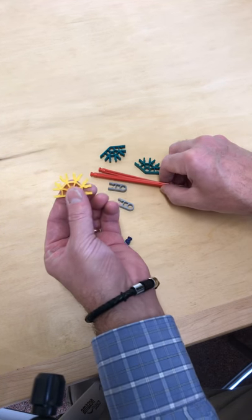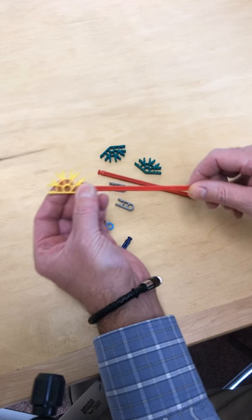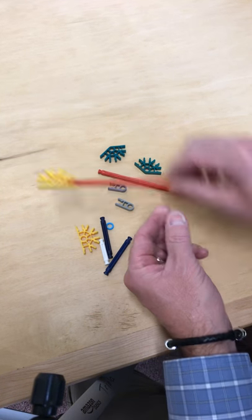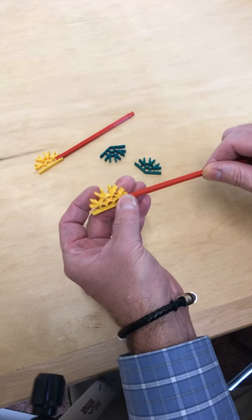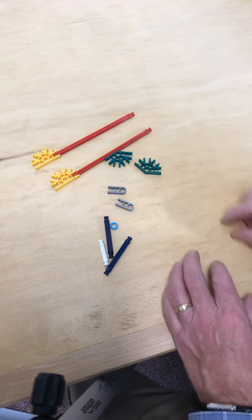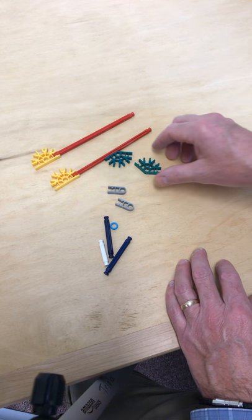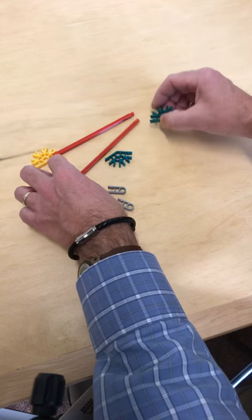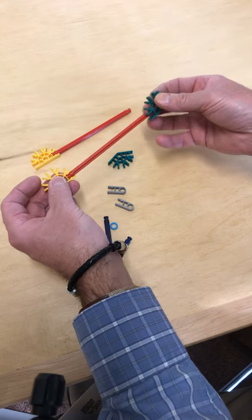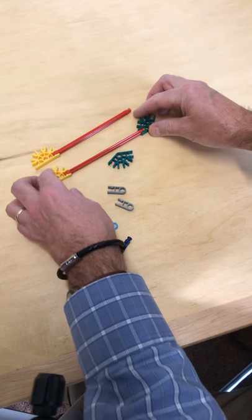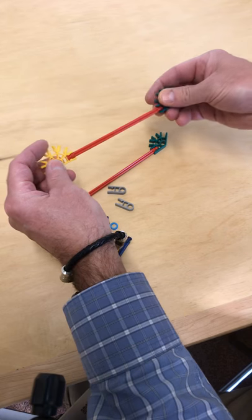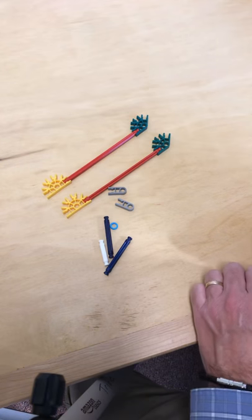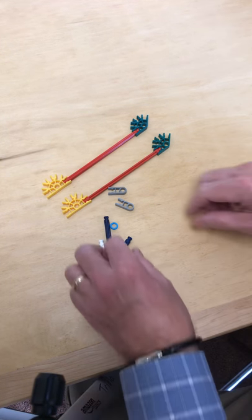The first thing you want to do is take your yellow connector and a red rod and put that together. Take your other yellow connector and red rod and put them together as well. Then take your green connector and put it on the end of a red rod, then take your other green connector and put it on the end of the other red rod.